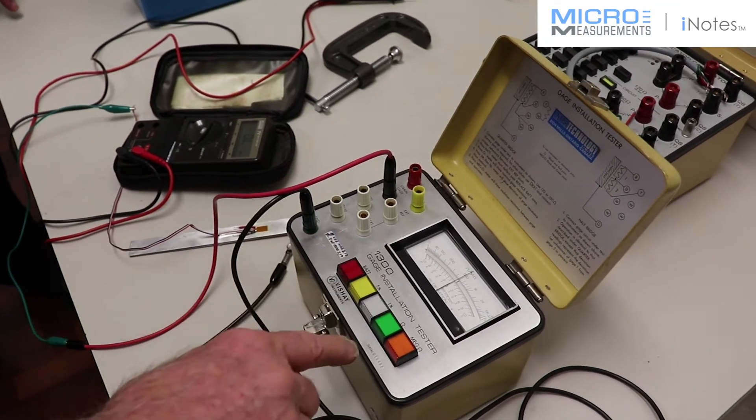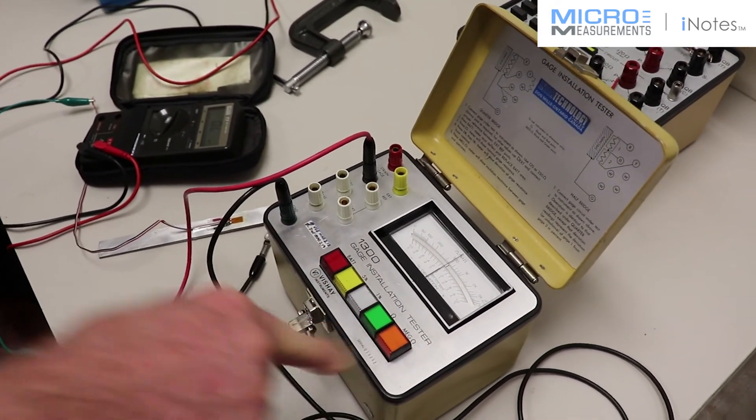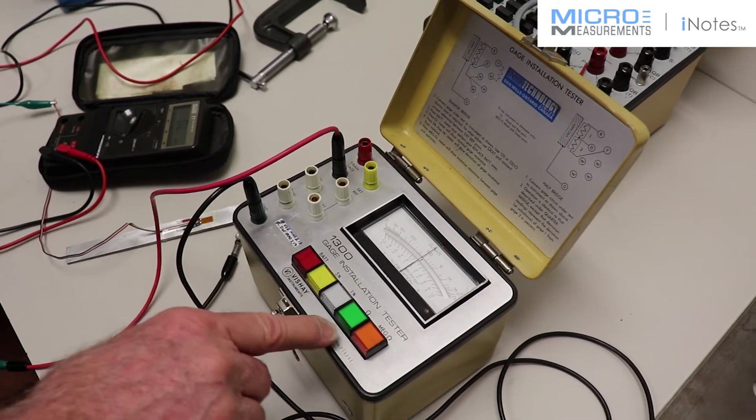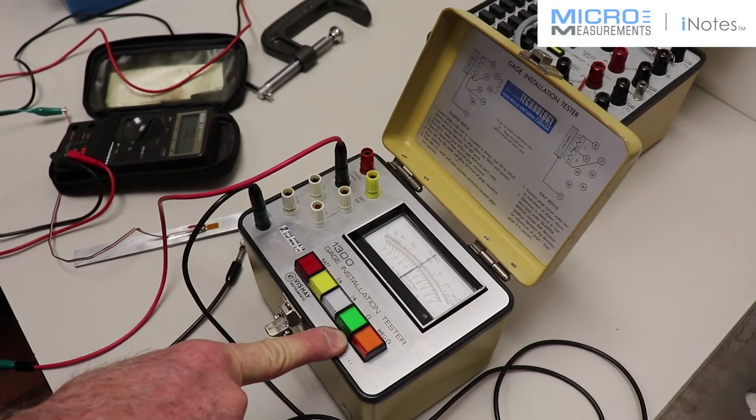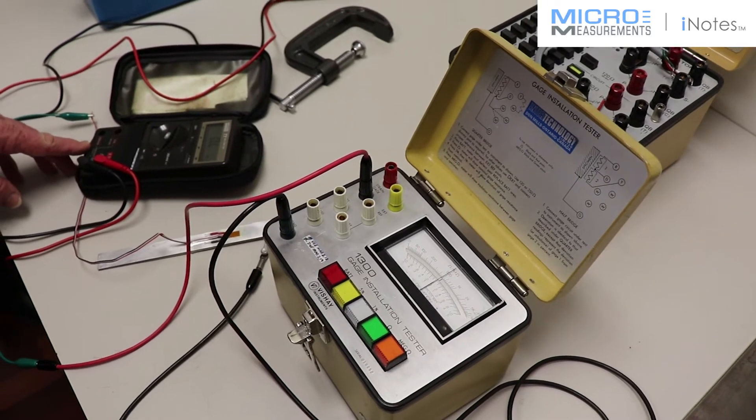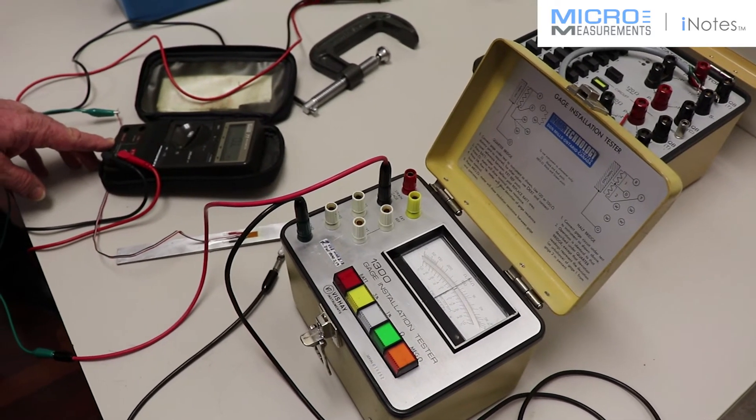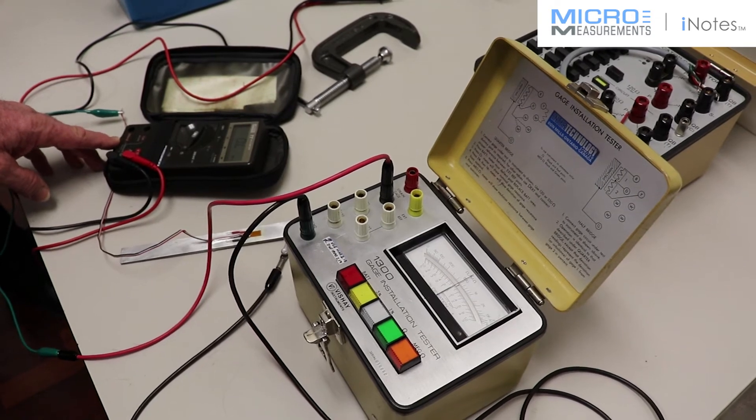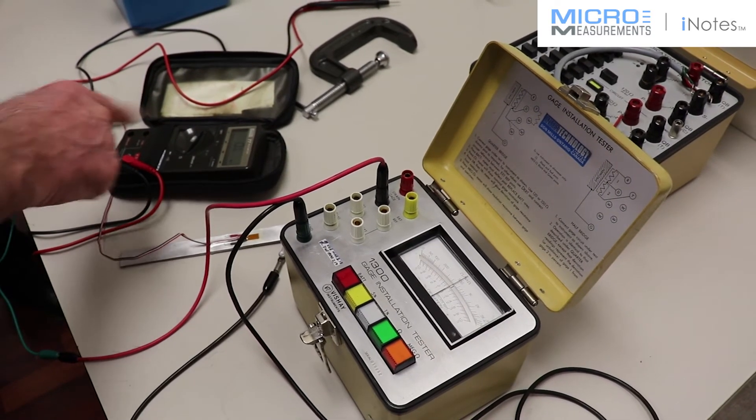we are driving the current that is going through the system with a 15 volt excitation. Whereas with an ohmmeter that you have here, we are actually driving it with something of the order of 9 volts or maybe less. So it's not the same animal.